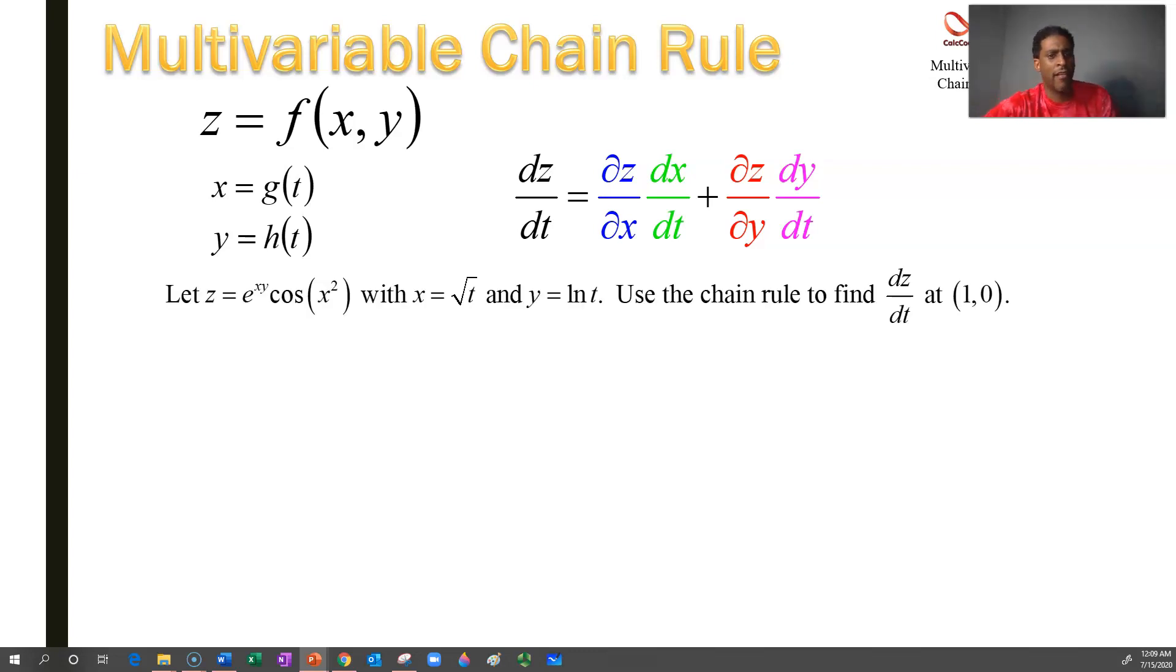Let's see it in action, where we have z equals e to the xy cosine of x squared, multivariable function of x and y. But we have x and y separately functions themselves of t. We have x is equal to the square root of t and y is equal to the natural log of t. We're interested in finding the derivative of z with respect to time at the point (1, 0). That's written as an ordered pair, meaning that x is 1 and y is 0.